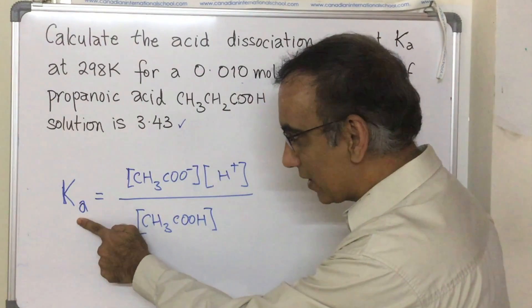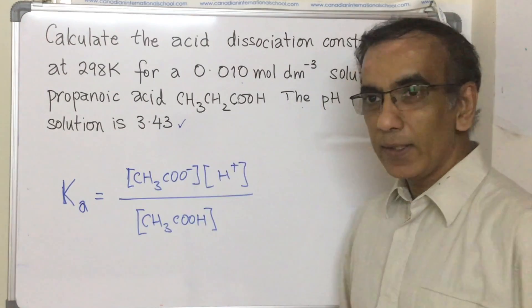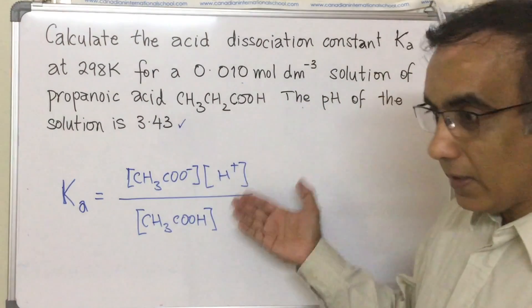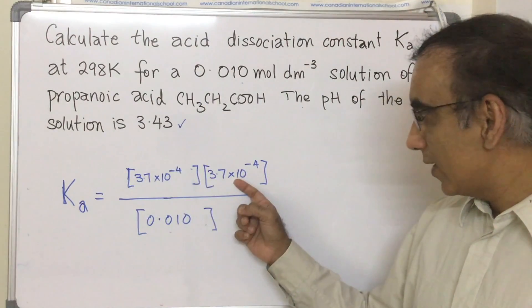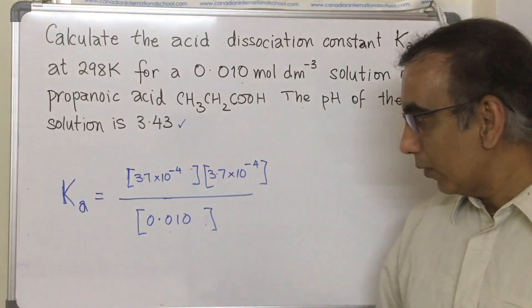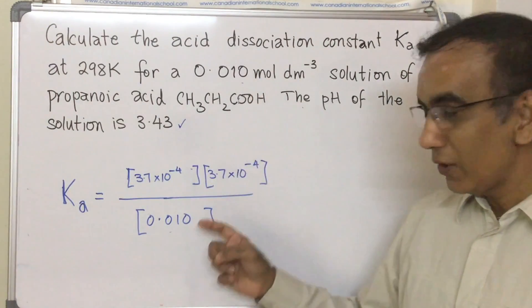Acid dissociation constant Ka, this expression holds. The concentrations that go into this expression are these. Noting here that we have 3.7 by 10 to the negative 4. The same here because they exist as a one-to-one ratio. And then here we don't subtract anything from this starting concentration.